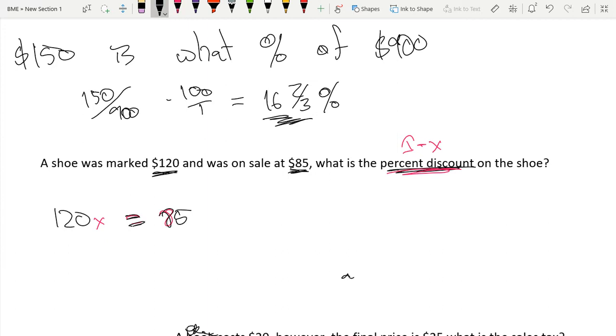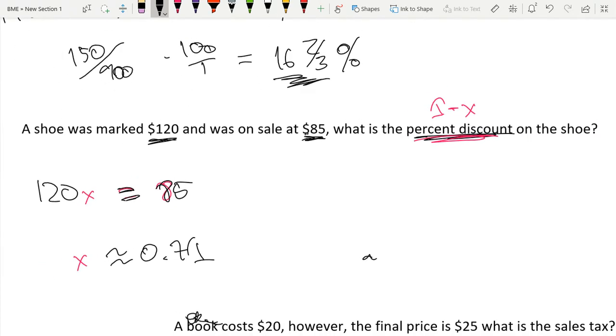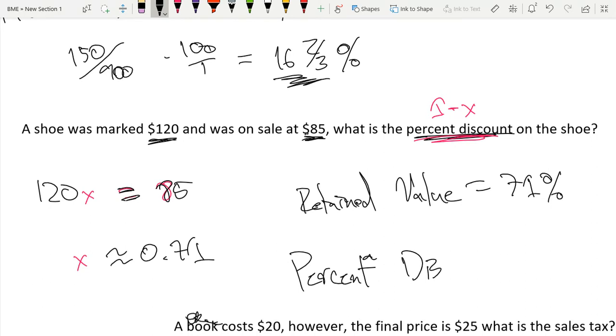Equals 85. So we get x equals 85 over 120, which is x is approximately 0.71. This would mean that if x equals 0.71, our retained value is equal to 71%. So our percent discount equals 29%.